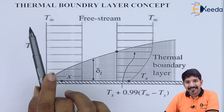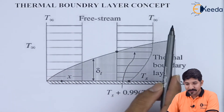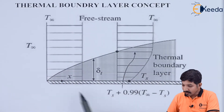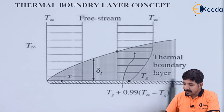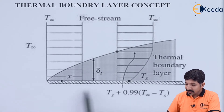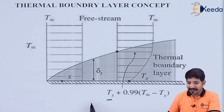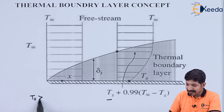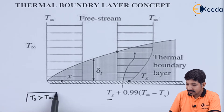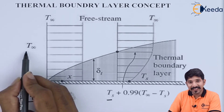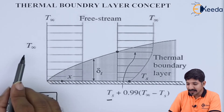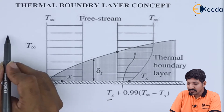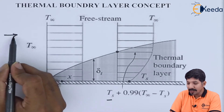Let us understand the thermal boundary layer concept. For that, we have kept a plate whose surface temperature is Ts, and we will assume that Ts is greater than T infinity, where T infinity is the temperature of the fluid which is flowing over the plate.